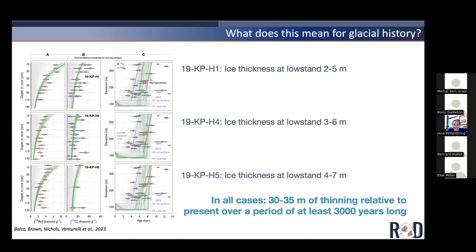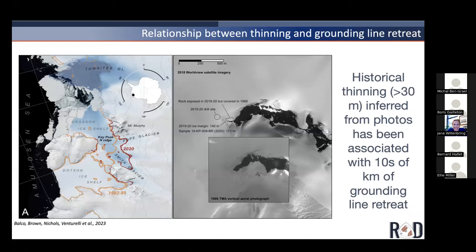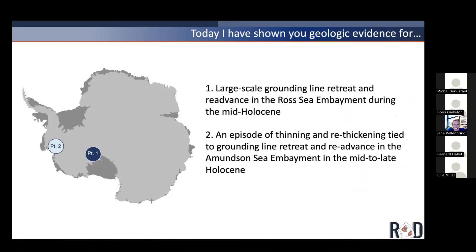In all model scenarios we find that ice thinned about 30 to 35 meters relative to present over a period lasting about 3,000 years in the middle to late Holocene, before re-thickening to where we observe the ice surface today. This tells us there was fluctuation in the Holocene that fills that time gap. Based on historical thinning observable from satellite and aerial photographs in this area, historical thinning of about 30 meters like we observe in the bedrock cores can be associated with tens of kilometers of grounding line retreat — similar to what we see in the Ross Sea Embayment.